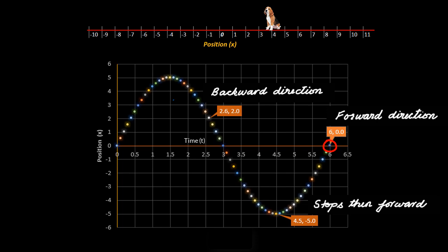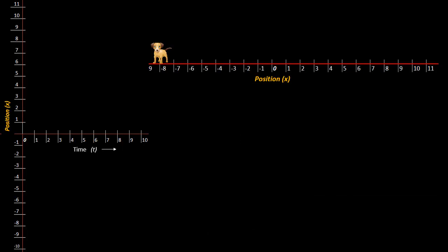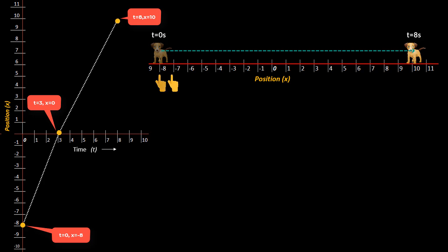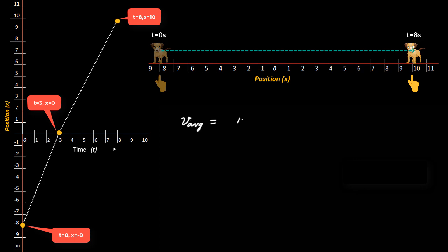Now let us understand the concept of average velocity. Looking back at Toto's graph, if asked how fast Toto was moving between t equal to 0 seconds and 8 seconds, the average velocity is the displacement divided by the time taken. The initial position was minus 8 meters, the final position was 10 meters, start time was 0 seconds, end time was 8 seconds. So the average velocity equals 10 minus (minus 8) divided by 8 minus 0, which equals 2.25 meters per second.